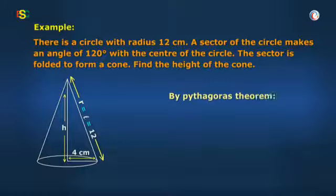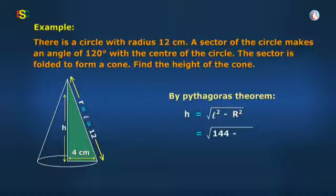So by using the Pythagoras theorem, H = √(L² - R²), which equals √(144 - 16), equals √128, that is equal to 8√2 centimeters.